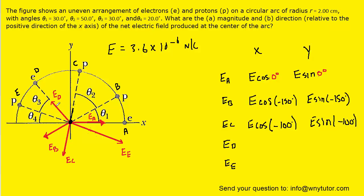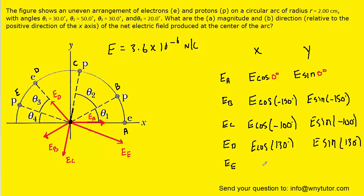For ED, which projects in this direction — from the question, theta 3 and theta 4 are 30 and 20 degrees respectively, so adding them gives 50 degrees. Measured from the positive x-axis, the angle to ED is 130 degrees — that's used for both the x and y components of ED. Finally, for the electric field produced by charge E, theta 4 is 20 degrees. Measured in a clockwise fashion, it's negative 20 degrees, giving E times cosine of negative 20 for x, and E times sine of negative 20 for y.